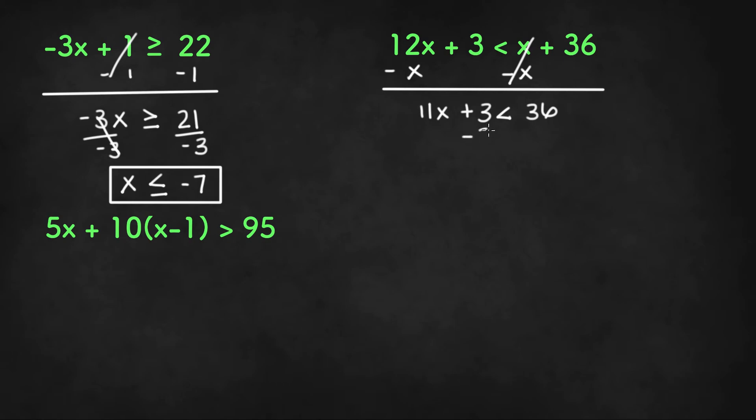Now we can subtract both sides by 3 and that will leave us with 11x is less than 36 minus 3 or 33. Divide both sides by 11 to get x is less than 3.